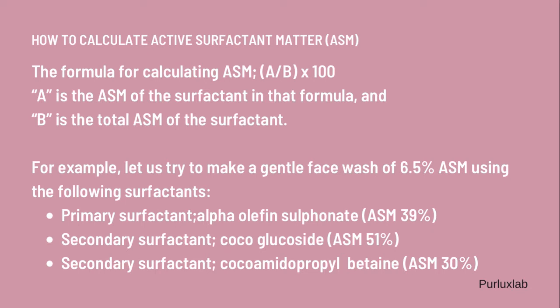Let's say you're trying to make a gentle face wash with 6.5% active surfactant matter, using three different surfactants. The primary surfactant is alpha-olefin sulfonate, which has an active surfactant matter of 39%. The secondary surfactant is cocoglucoside, with an active surfactant matter of 51%. And the last one is cocamidopropyl betaine, with an active surfactant matter of 30%.